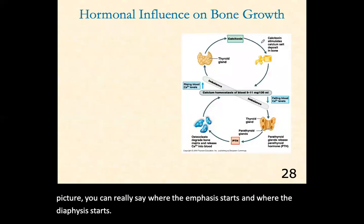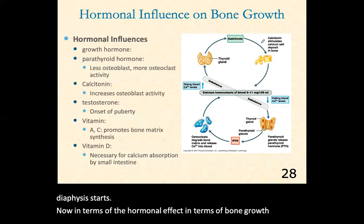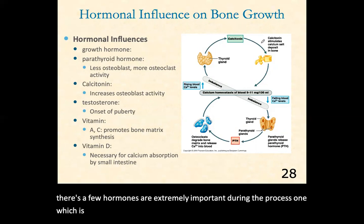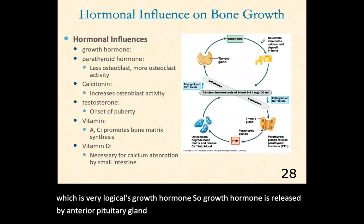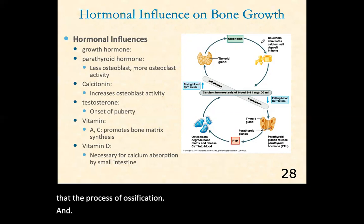In terms of hormonal effects on bone growth, there are a few hormones that are extremely important during the process. One which is very logical is growth hormone. Growth hormone is released by the anterior pituitary gland and is important in making sure that the process of ossification and chondrocyte formation happens properly, allowing the bone to continue growing.